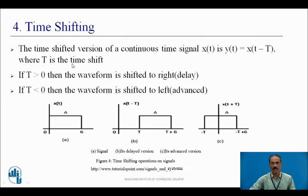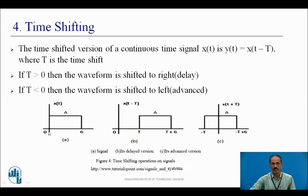Time shifting: the time-shifted version of continuous time signal x(t) is y(t) = x(t − T), where T denotes the time shift. If T > 0, the waveform is shifted to the right — there is a delay. If T < 0, the waveform is shifted to the left — it is advanced. For example, x(t) has amplitude a and varies from 0 to 6. For x(t − T) with T positive, the first point shifts from 0 to T and the second point shifts from 6 to T + 6.